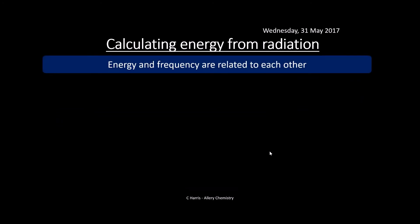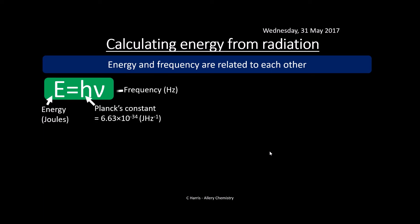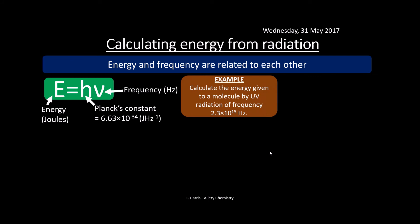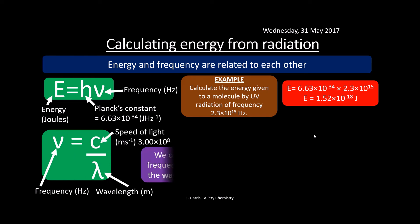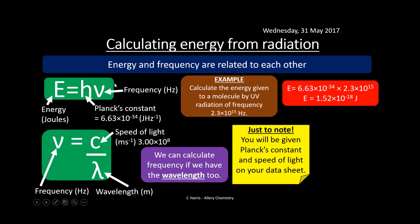Energy and frequency are related to each other. The equation is E = hf, where E is energy in joules, h is Planck's constant (6.63 × 10⁻³⁴ J Hz⁻¹), and f is frequency in hertz. For example: calculate the energy given to a molecule by UV radiation of frequency 2.3 × 10¹⁵ Hz. We take E = hf, substitute in Planck's constant times 2.3 × 10¹⁵, and get an energy of 1.52 × 10⁻¹⁸ joules.